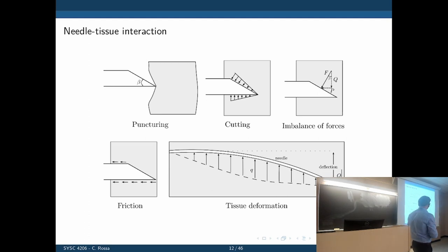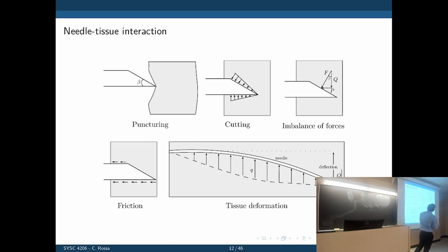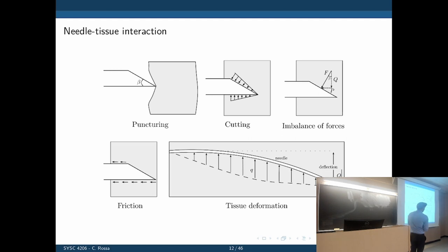Once the tip is fully inside, we reach the second phase: the cutting phase. Now the needle is cutting through the tissue, breaking the tissue fibers. As a result of that bevel, the tissue is being displaced on top and at the bottom — you're basically compressing the tissue under the needle and above the needle as it travels. The top has more tissue in contact, so the upper surface has greater tissue displacement than the bottom.